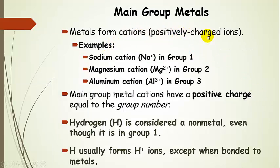So this is summing up what we said. Metals form cations, positively charged ions. They lose electrons. They have more protons than electrons. Some examples: a sodium cation, he's in group 1, forms a plus 1 cation.